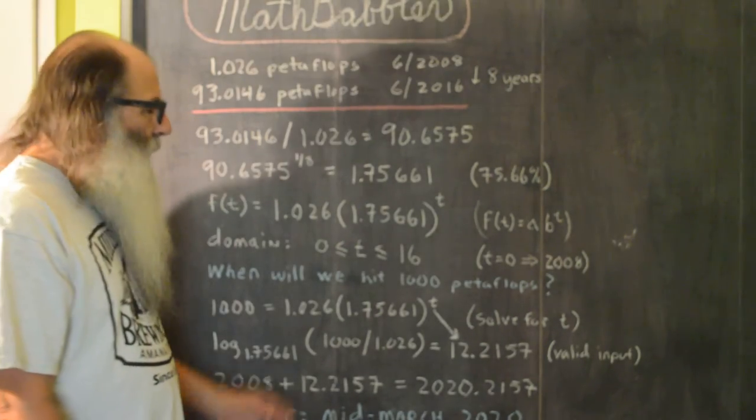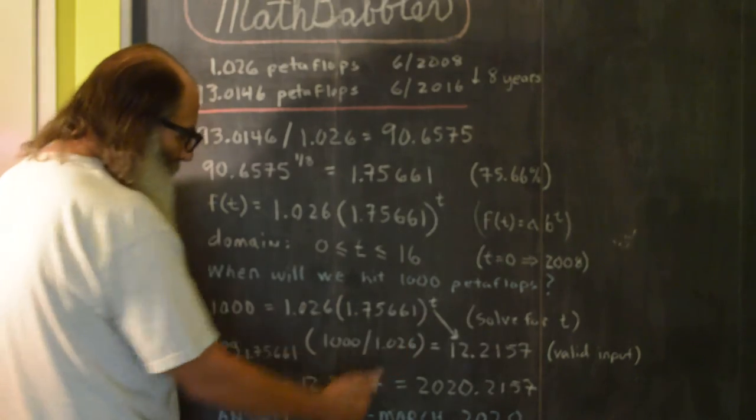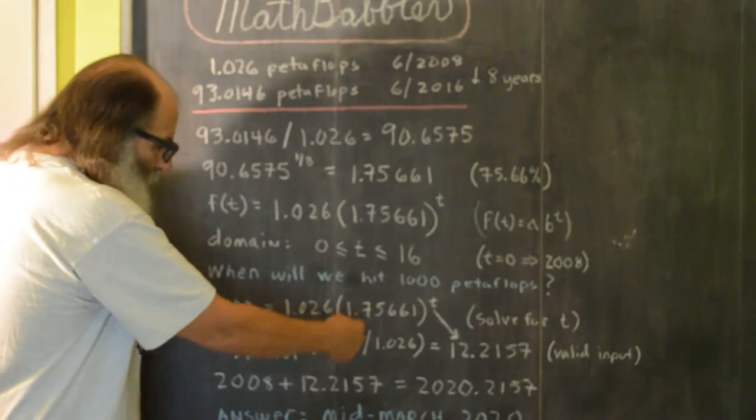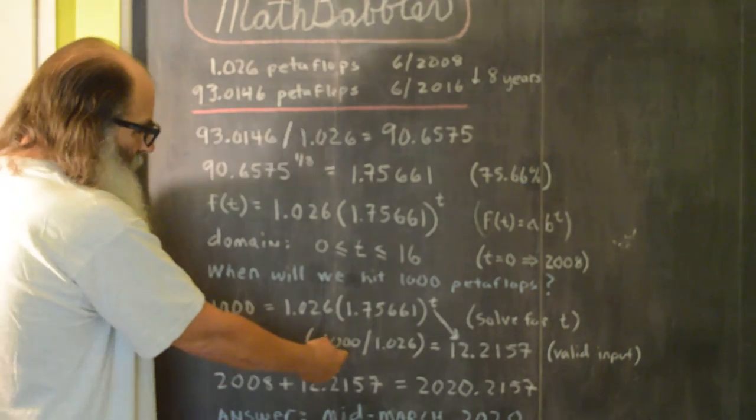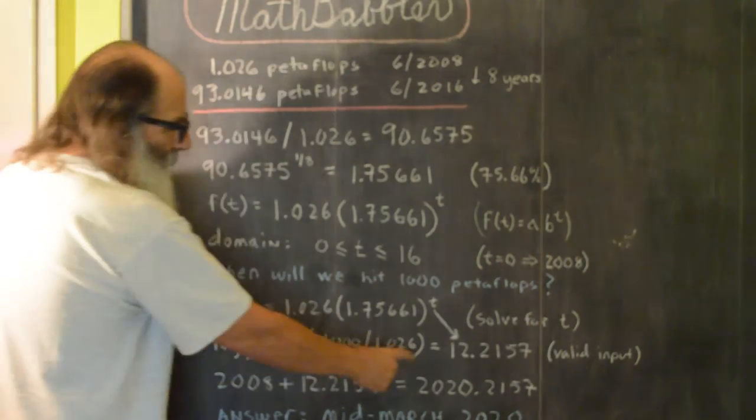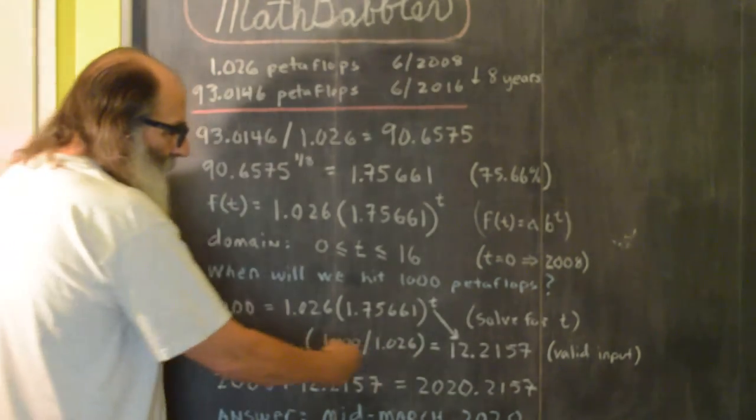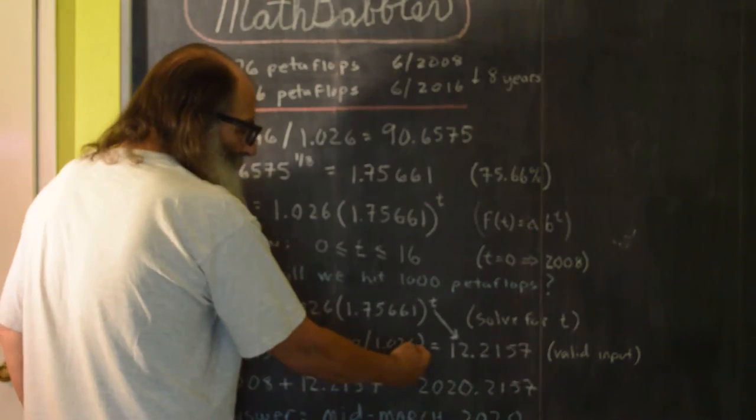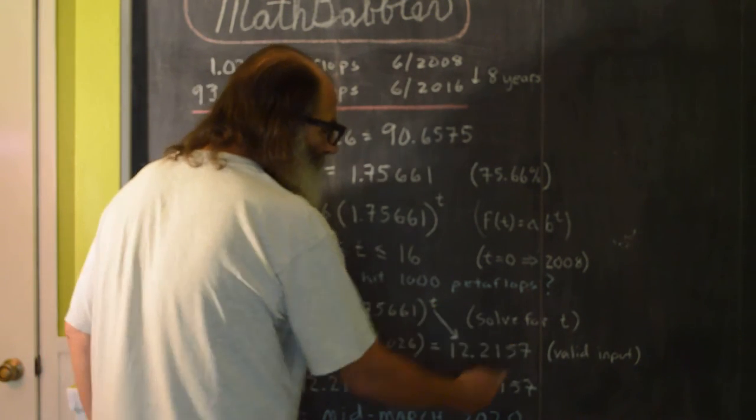A common way of doing a problem like this is to switch from this exponent notation to log notation. The growth factor becomes the base of the log. And then the input to the log is the output divided by the initial value. And if you go ahead and evaluate this expression, that's going to equal t, which in this case evaluates to 12.2157.